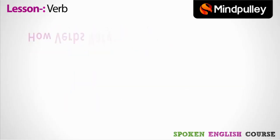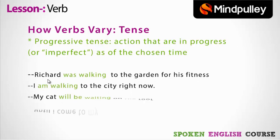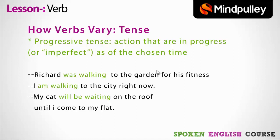Now we have progressive tense — actions that are in progress or imperfect as of the chosen time. Yaani ki woh actions jo progress mein hote hain, unhe hum progressive tense ke under lete hain. 'Richard was walking to his garden for his fitness' — 'was walking' is past progressive tense. 'I am walking to the city right now' — 'am walking' is present progressive tense. 'My cat will be waiting on the roof until I come to my flat' — 'will be waiting' is future progressive tense. So we can say that the verb changes according to the time in which an action was performed. Thank you.